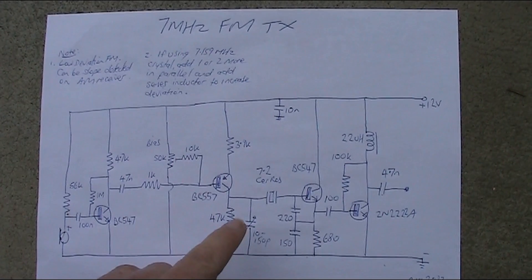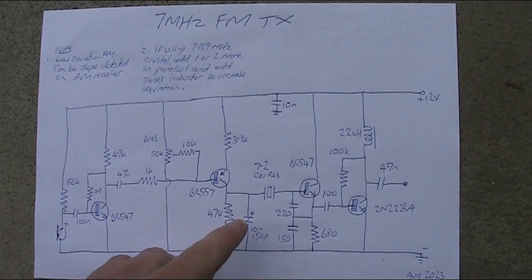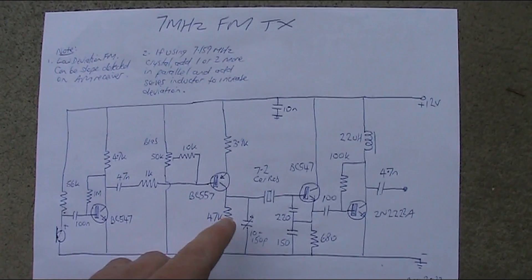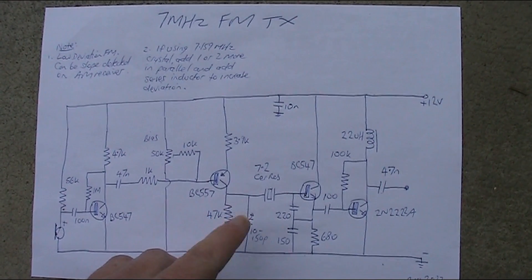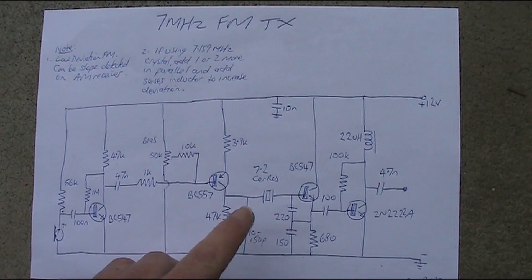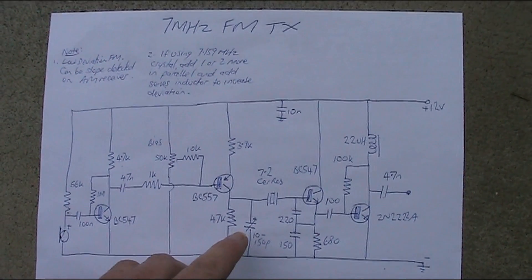When you adjust that in conjunction with the bias setting on here, you can actually achieve a fairly good amount of frequency agility. But note that if you want the most amount of modulation, it's only at frequencies near the top end of the range, where this variable capacitor is set to minimum.